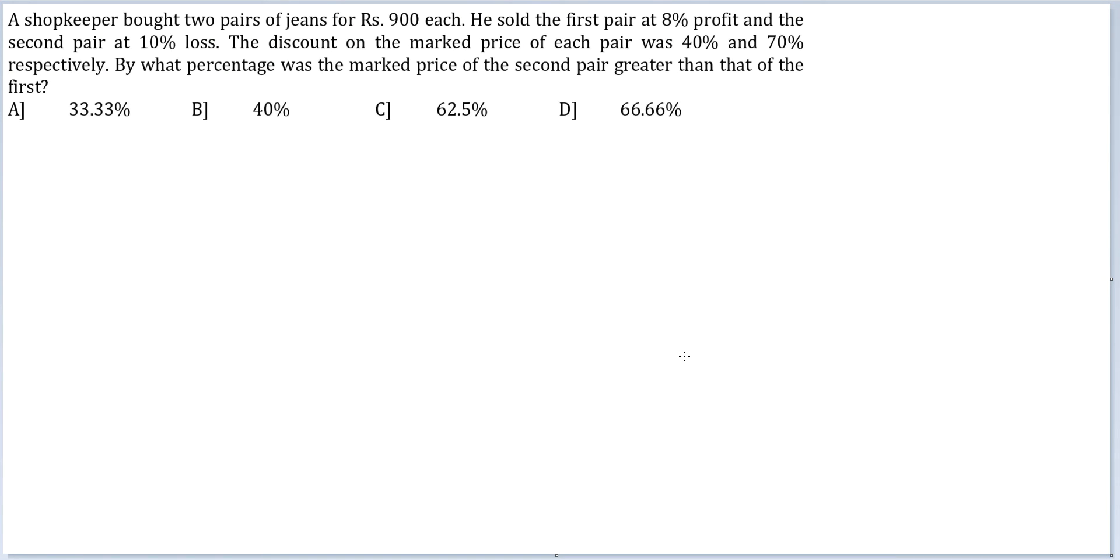Let's look at this question. A shopkeeper bought two pairs of jeans at Rs.900 each. He sold the first pair at 8% profit and the second pair at 10% loss. The discount on the market price of each pair was 40% and 70% respectively. By what percentage was the market price of the second pair greater than that of the first?